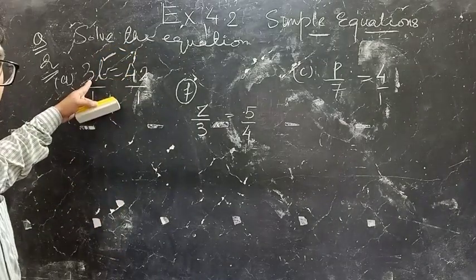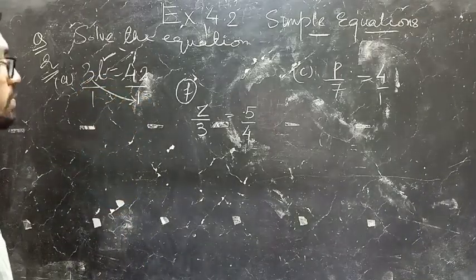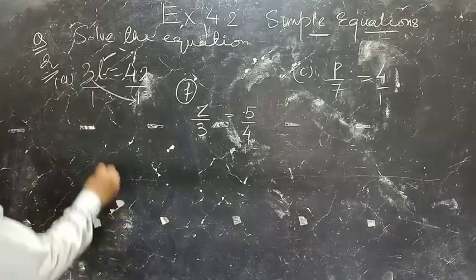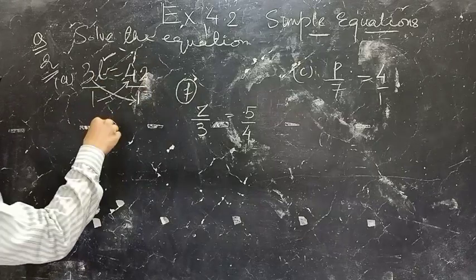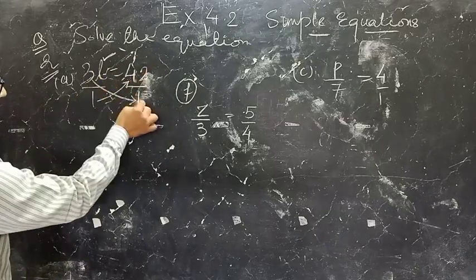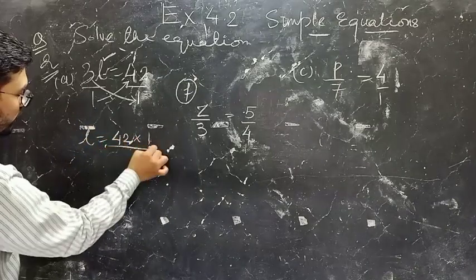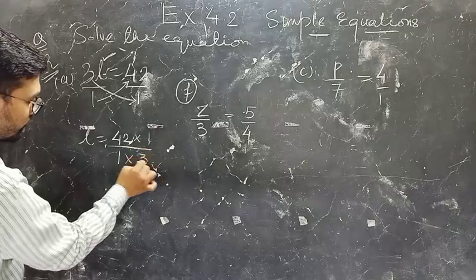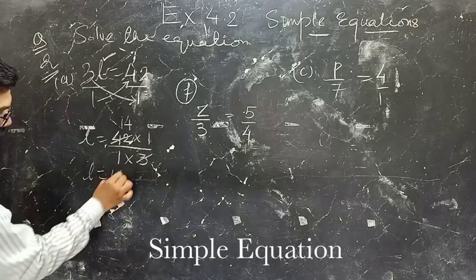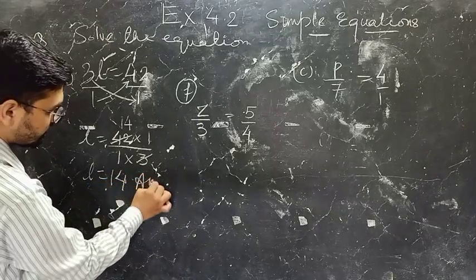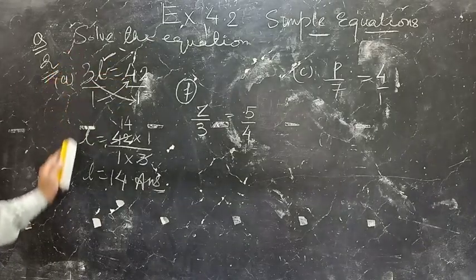Why I am saying cross multiplication is because it forms a cross — this 1 is multiplied by 42 and this 3 is multiplied by 1. So L equals 42 divided by 3, which is 14. This is how you solve this equation and find the value of L.